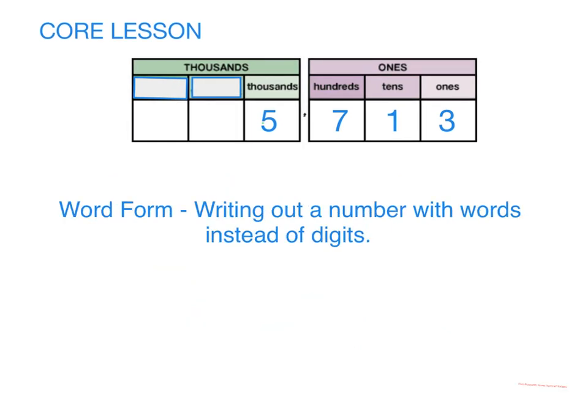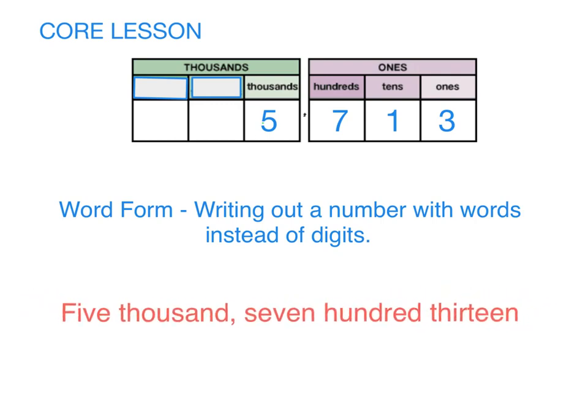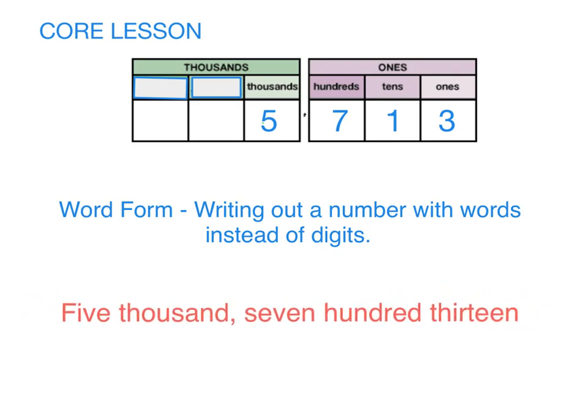The second way to write a number is word form. Word form is just writing out a number with words instead of digits. So what would this number look like in word form? Five thousand, seven hundred thirteen. Notice that the comma in word form is in the same place that it was in standard form.